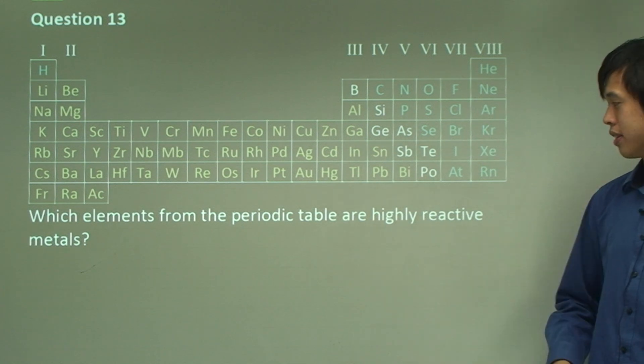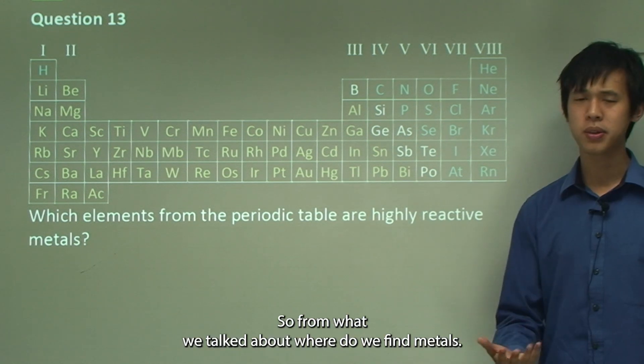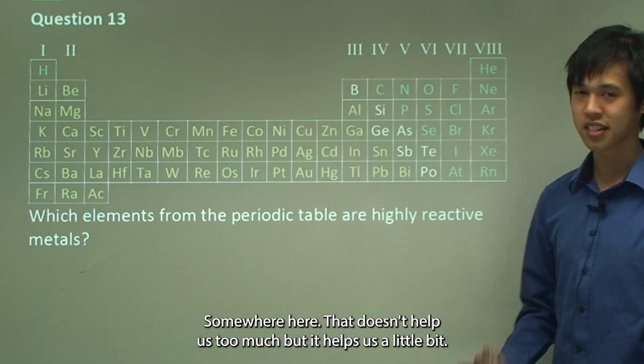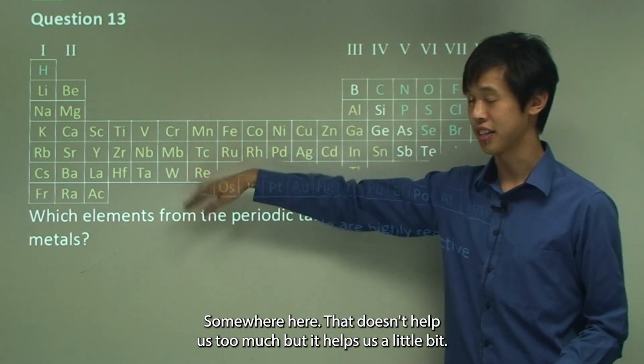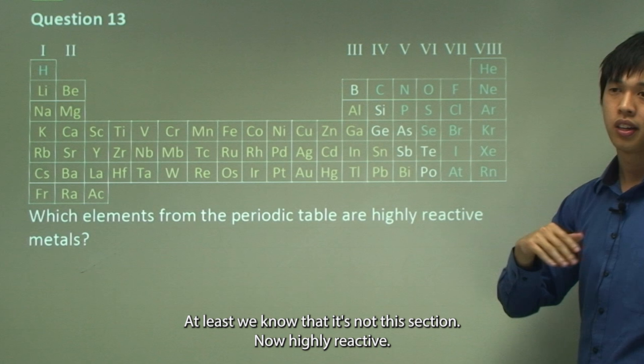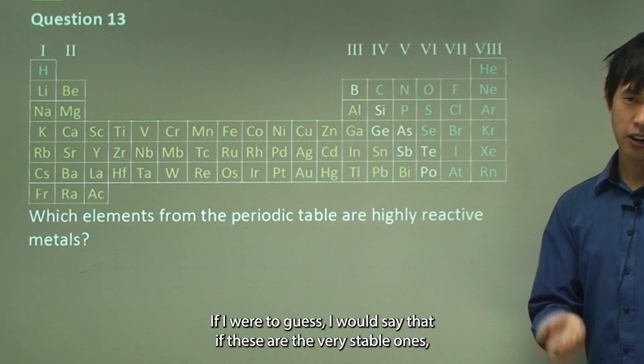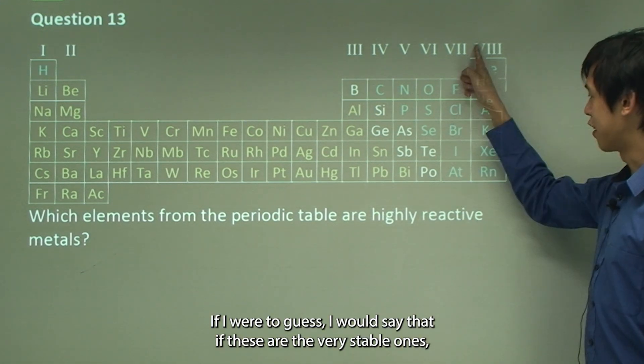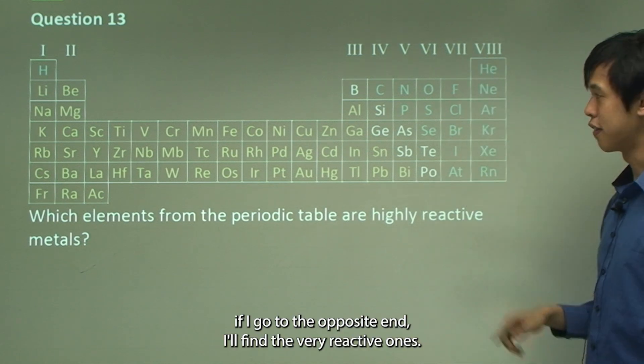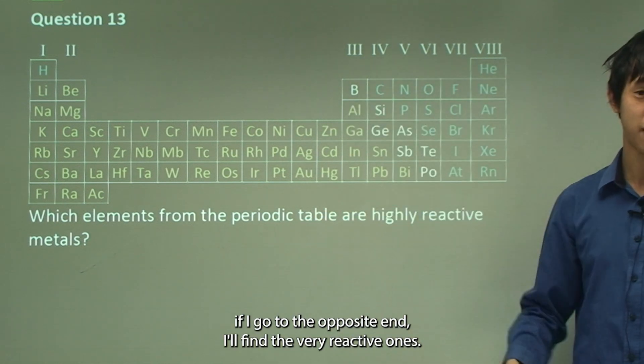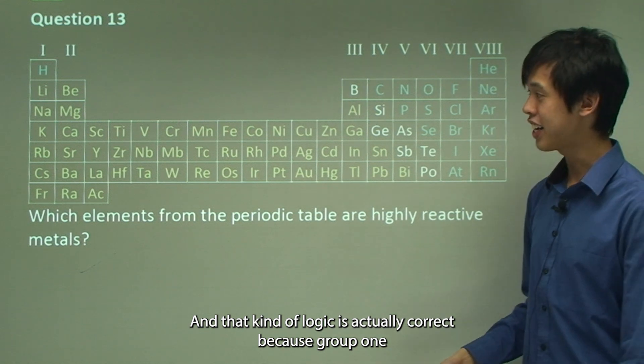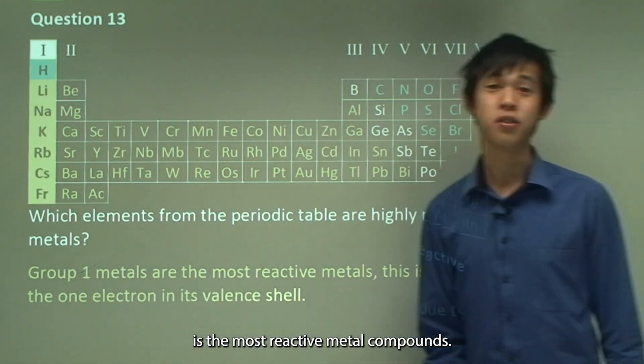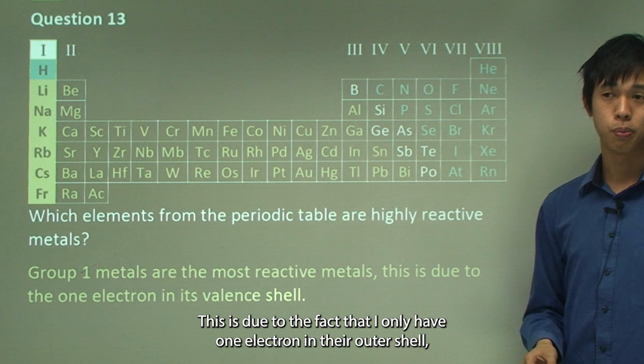Which elements from the periodic table are highly reactive metals? From what we talked about, where do we find metals? Somewhere here. That doesn't help us too much but it helps us a little bit, at least we know that it's not this section. Now highly reactive, if I was to guess I would say that if these are the very stable ones, if I go to the opposite end I'll find the very reactive ones. And that kind of logic is actually correct because group 1 is the most reactive metal compounds.